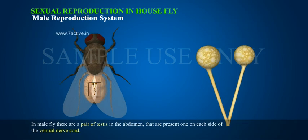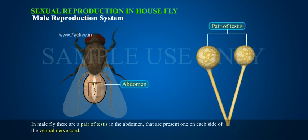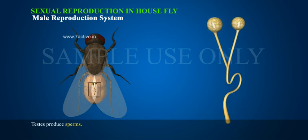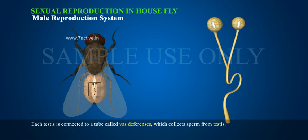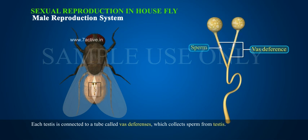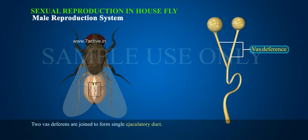In male fly, there are a pair of testes in the abdomen, one on each side of the ventral nerve cord. Testes produce sperms. Each testis is connected to a tube called vas deferens, which collects sperm from the testes. Two vas deferens are joined to form a single ejaculatory duct.